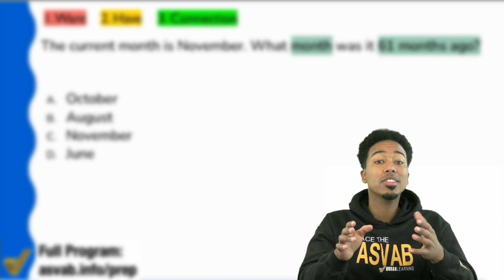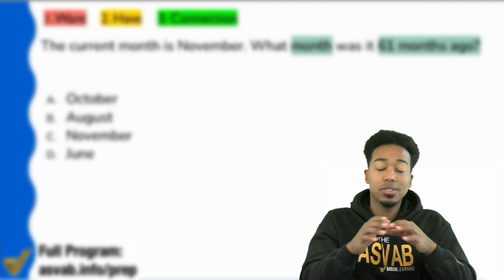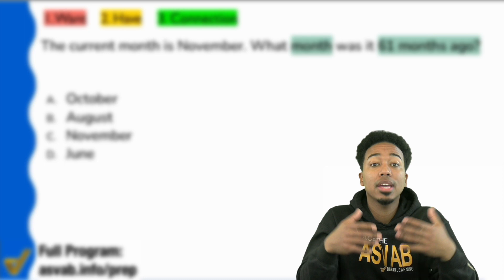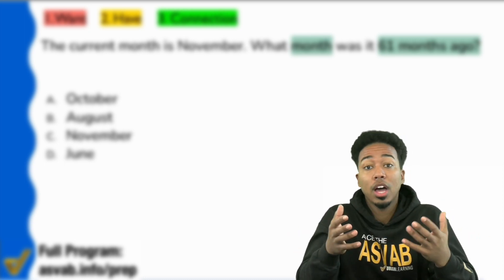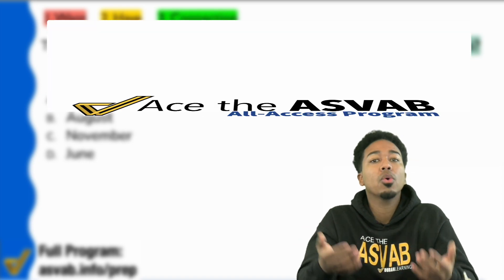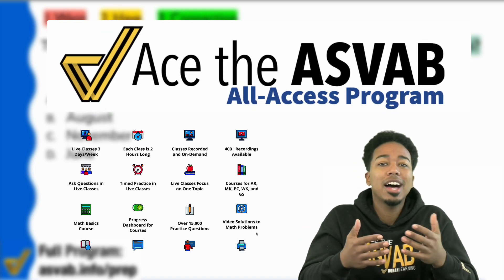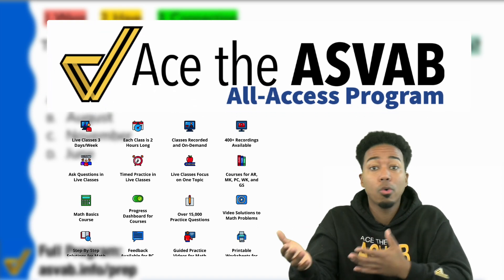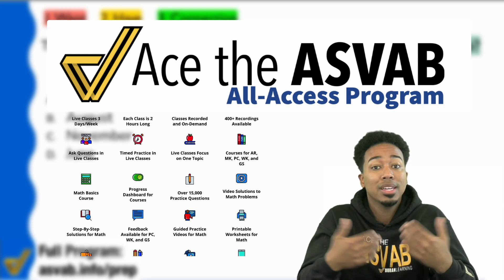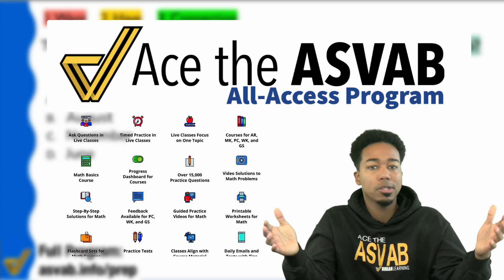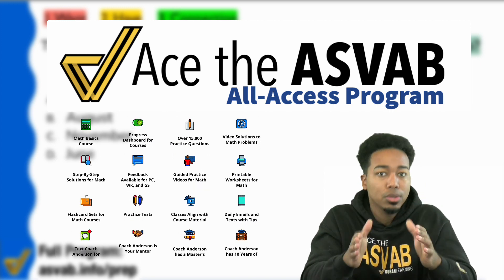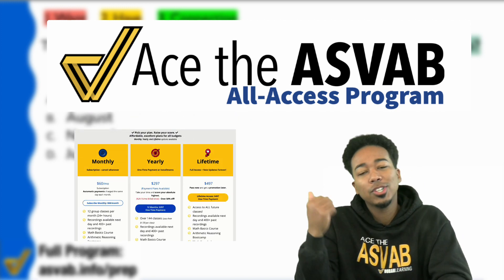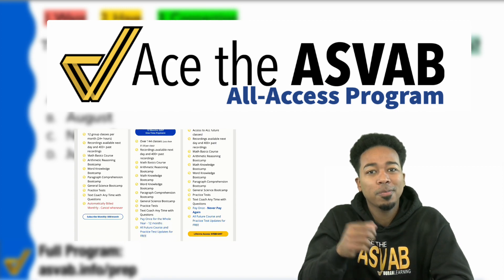And before we continue, one of the main frustrations that so many people have with the ASVAB is not knowing what to study and how to study to begin with. If you're one of those people that can do a good job if everything's lined up for you, then go ahead and join our program. We have all the classes, all the recordings, all the courses with practice questions with videos, and you can text me all the way up until you pass. It's very simple, straightforward, and it gets you to the score and the job you want. Check out the link in the description of this video to learn more and sign up now.